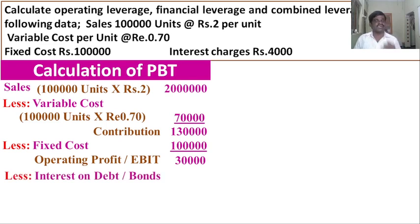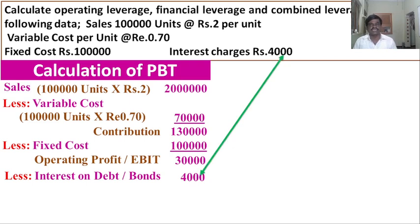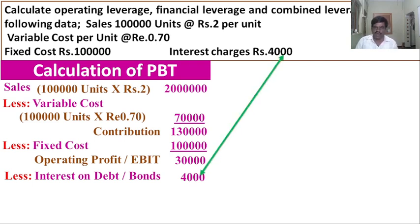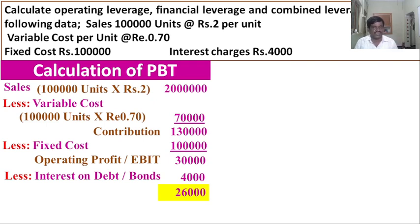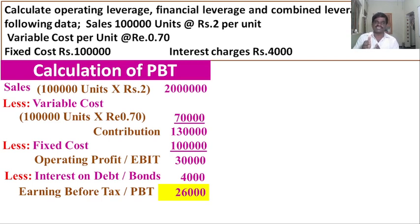From EBIT we deduct interest on debt — interest on loan or bond. The interest charges given in the problem are rupees 4,000. So EBIT of rupees 30,000 minus interest of rupees 4,000 gives rupees 26,000. This rupees 26,000 is called earning before tax, or profit before tax. Tax has not been deducted yet.